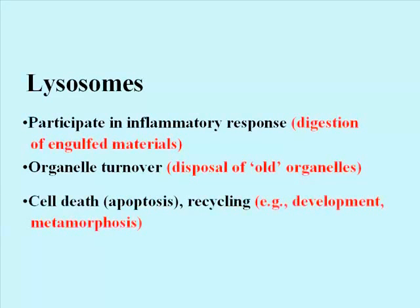Lysosomes also play a role in the programmed death of cells that are no longer needed, a process called apoptosis, which means programmed cell death. This happens for example during metamorphosis, when a tadpole becomes a frog, or a caterpillar becomes a butterfly, or in differentiation in animals, in which old tissues are reabsorbed and remodeled into new ones.